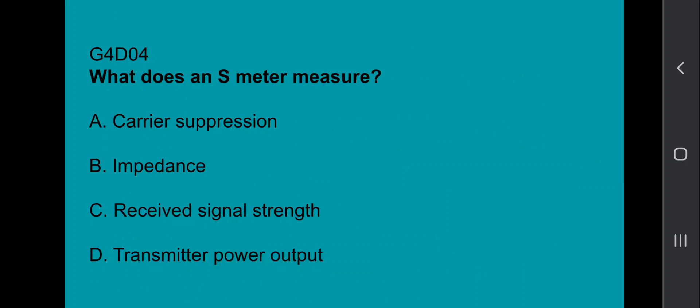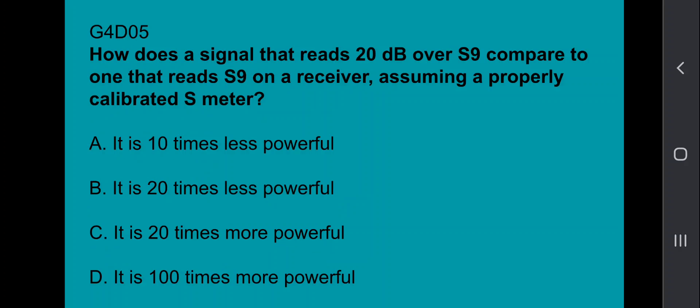G4D04, what does an S meter measure? That's going to be received signal strength. G4D05, how does a signal that reads 20 dB over S9 compare to one that reads S9 on a receiver, assuming a properly calibrated S meter? And that's it is 100 times more powerful.